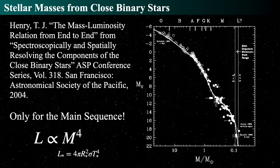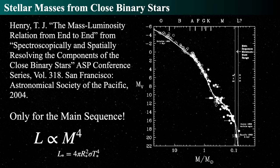This is the mass-luminosity relationship from the binary star lecture by T.J. Henry, showing definitively that in close binary stars in the solar neighborhood there is a very good empirical relationship between main sequence stars' masses and their luminosity — and therefore their spectral type. The graph shows mass at the bottom, spectral type OBAFGKM at the top, and absolute visual magnitude on the axis. There is an enormous variation from about one-thousandth of the sun's luminosity all the way up to millions of times the luminosity of the sun up in the O-type stars.